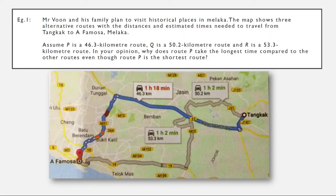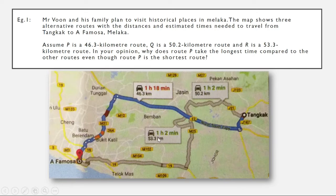Now we look at the first example. Mr. Boone and his family plan to visit historical places in Melaka. The map shows three alternative routes with the distances and estimated times needed to travel from Tangka to A Famosa, Melaka. Route P is a 46.3 km route, Q is a 50.2 km route, and R is 53.3 km route. In your opinion, why does route P take the longest time compared to the other routes, even though route P is the shortest route?